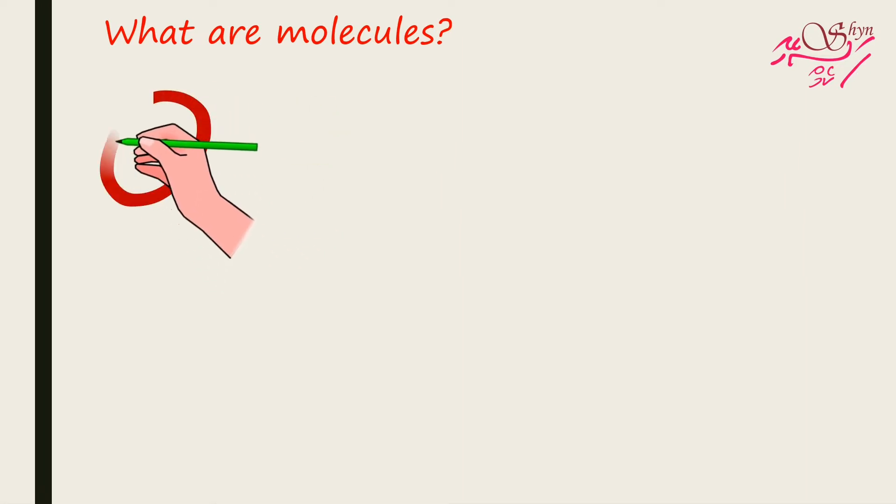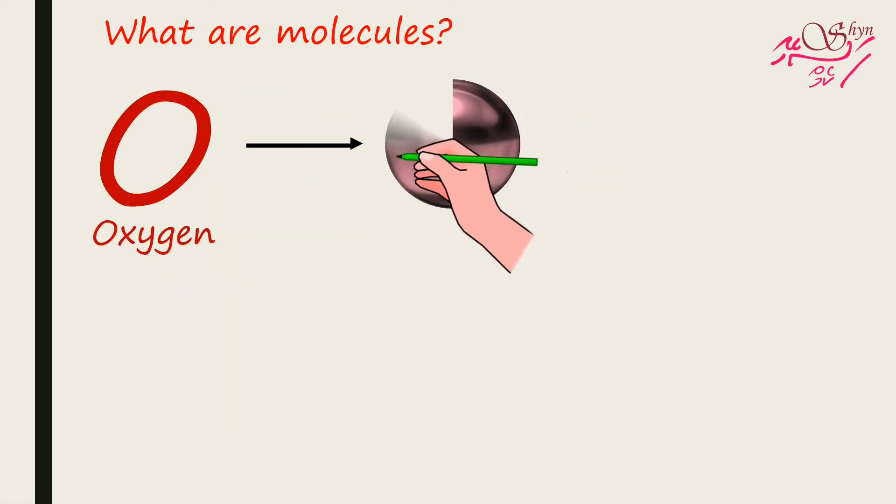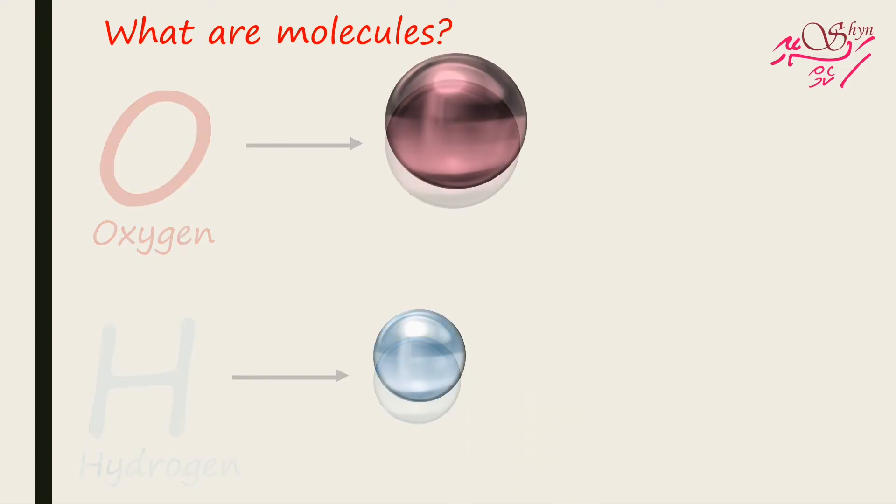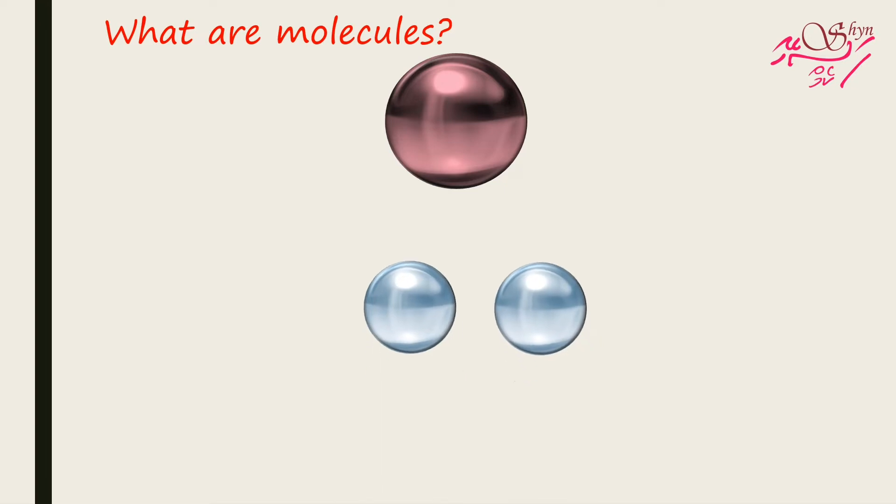This is an oxygen atom and this maroon ball will be used to represent oxygen. And this is a hydrogen atom and this blue ball is used to represent hydrogen atom. When one atom of oxygen and two atoms of hydrogen chemically combine together, it forms a water molecule.